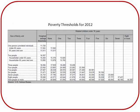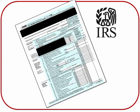Poverty means that annual family income is below official poverty thresholds. These thresholds depend on the number of people in the family and their ages. For example, for a household of four people with two people under the age of 18, the 2012 poverty threshold is $23,283. If the family's reported annual income is below that amount, all four family members are considered to be living in poverty.